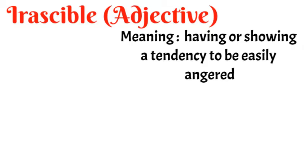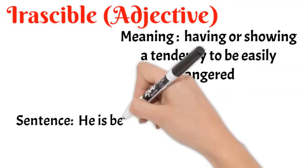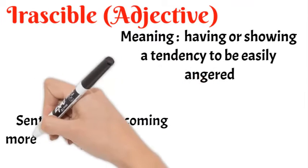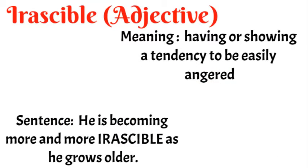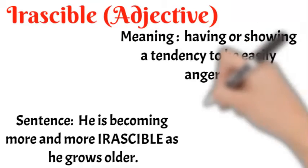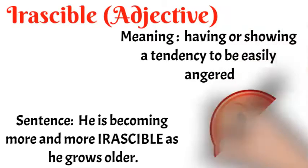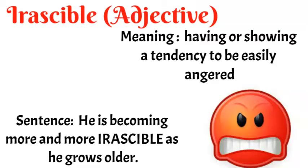Aisa koi insaan jo jaldi ghussa ho jaata ho, irritate ho jaata ho — aap usko irascible person kehte ho. Example: 'He is becoming more and more irascible as he grows older.' Woh bohat zyada irritate hota jaata hai jaise jaise uski umra badh rahi hai. So it is someone who gets easily angered. I hope the word is clear.